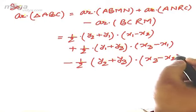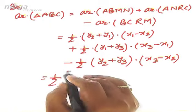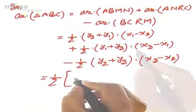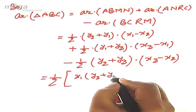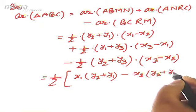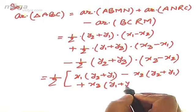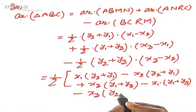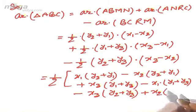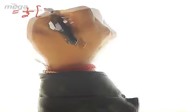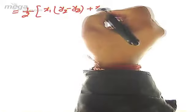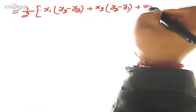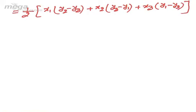Taking ½ common and opening all brackets: x1(y2 + y1) − x2(y2 + y1) + x3(y1 + y3) − x1(y1 + y3) − x3(y2 + y3) + x2(y2 + y3). After simplification, the final result is: ½ × [x1(y2 − y3) + x2(y3 − y1) + x3(y1 − y2)]. This is the area of the triangle.